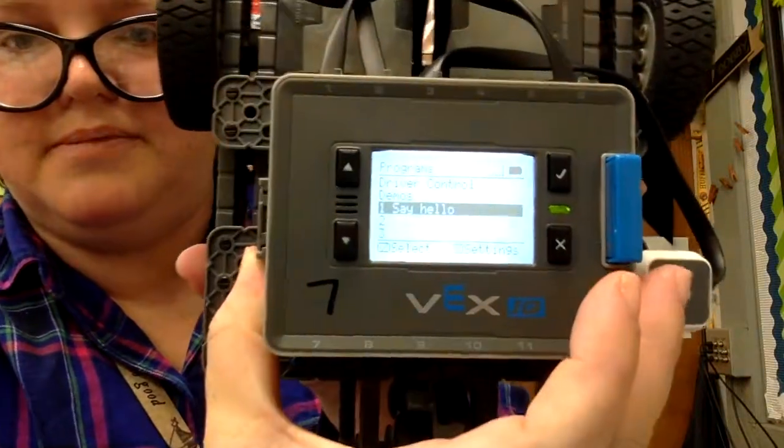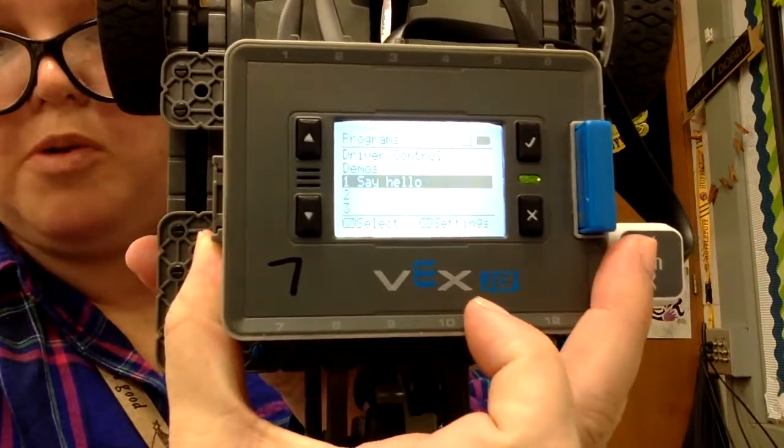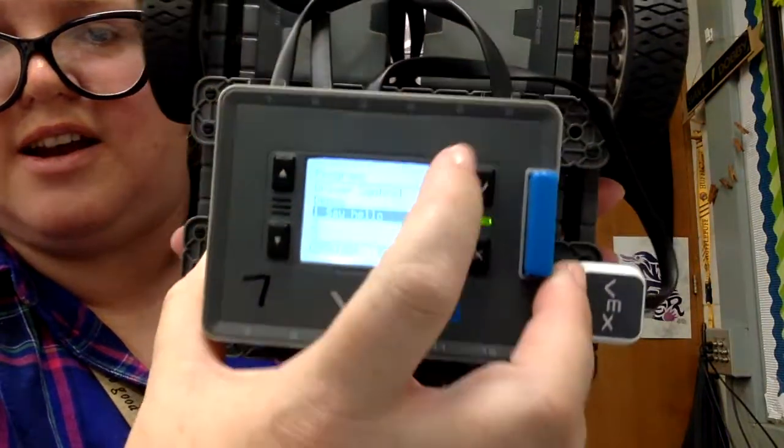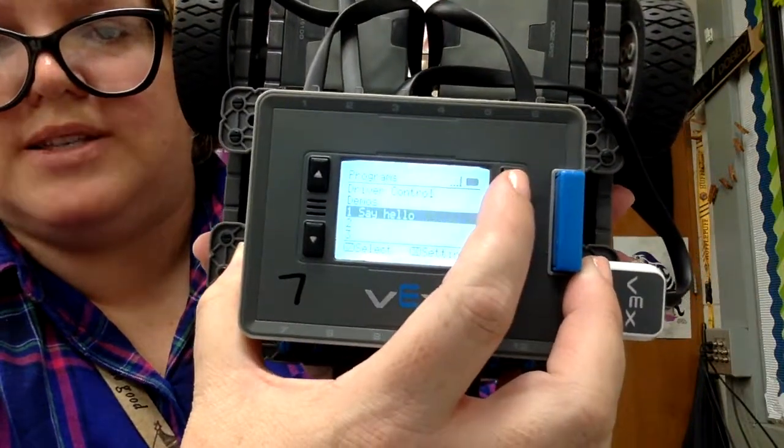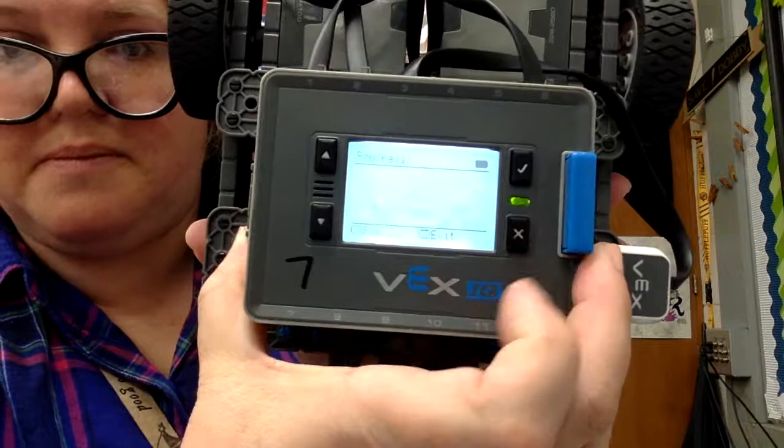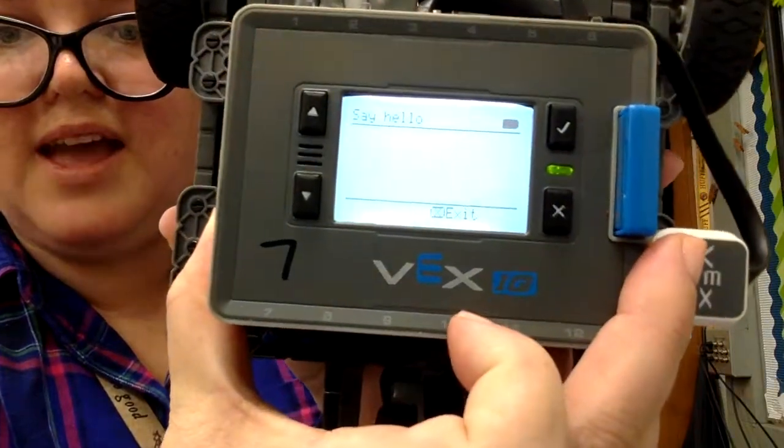And now here's my robot brain. I have the Say Hello program. Yay! It's there. And if I want to run it, I just press the check mark. Hello. That's it. So that's the Say Hello program.